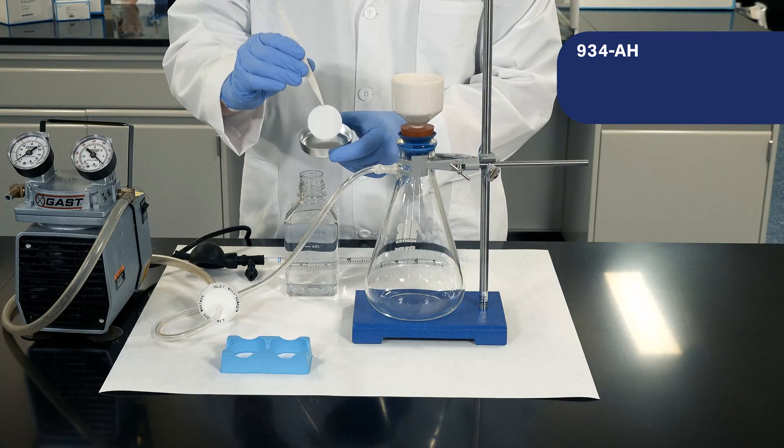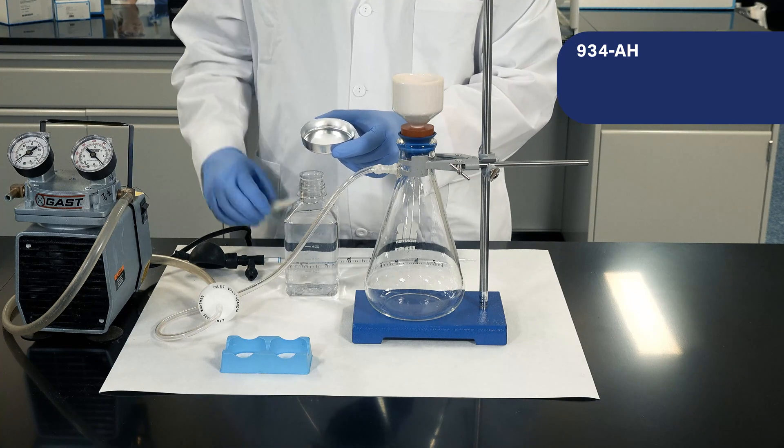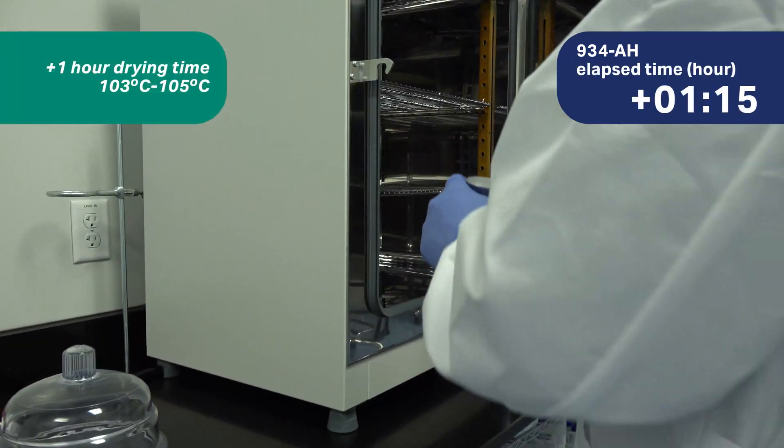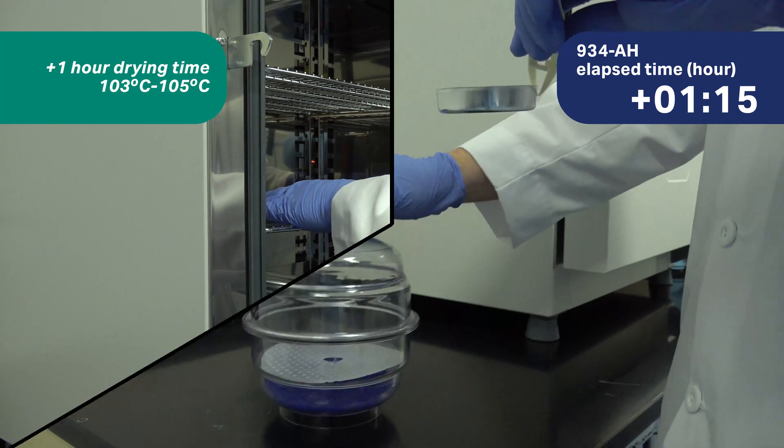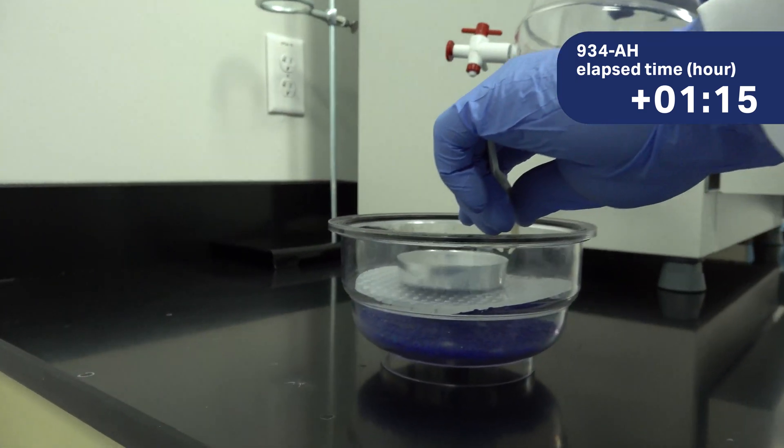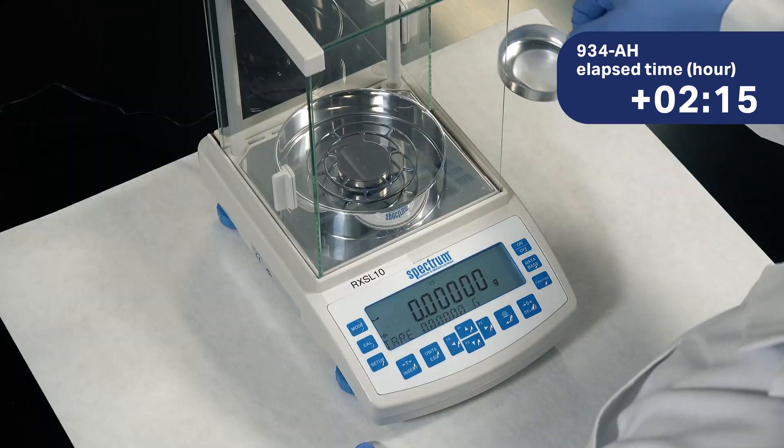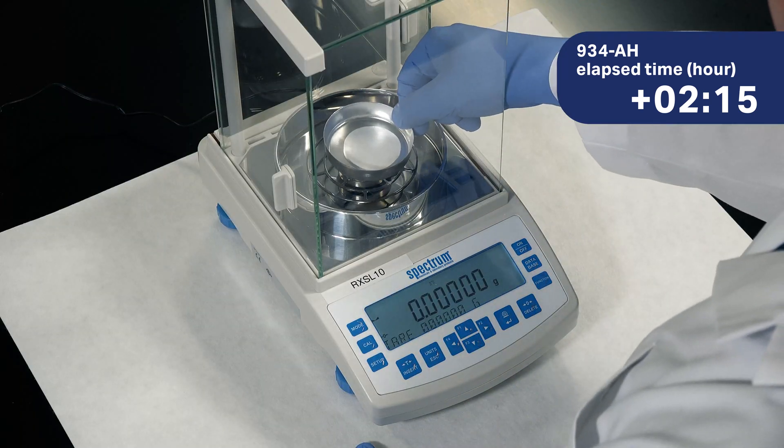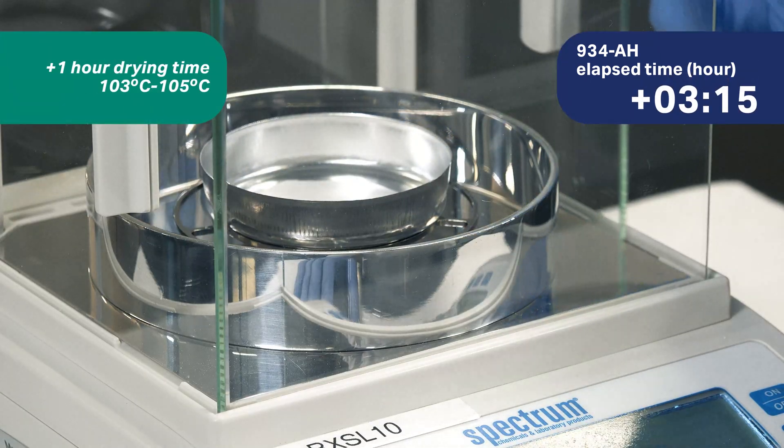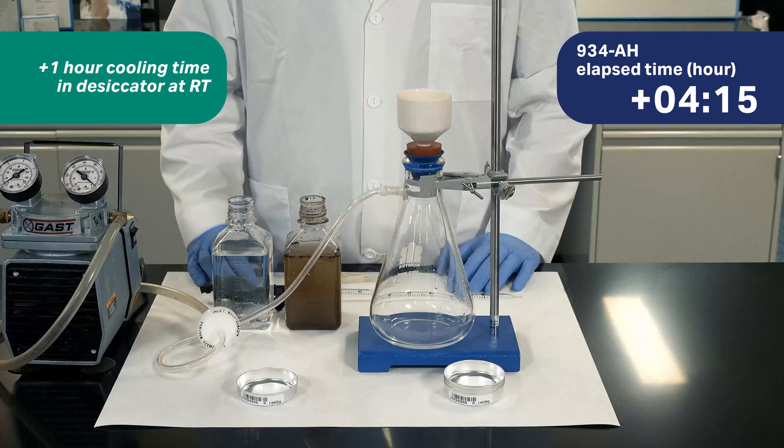Next, place the filter in a crucible and dry it in a laboratory oven for at least one hour. Carefully remove the filter from the oven and cool it in a desiccator. Then, weigh the filter on an analytical balance. The drying and weighing process is then repeated.